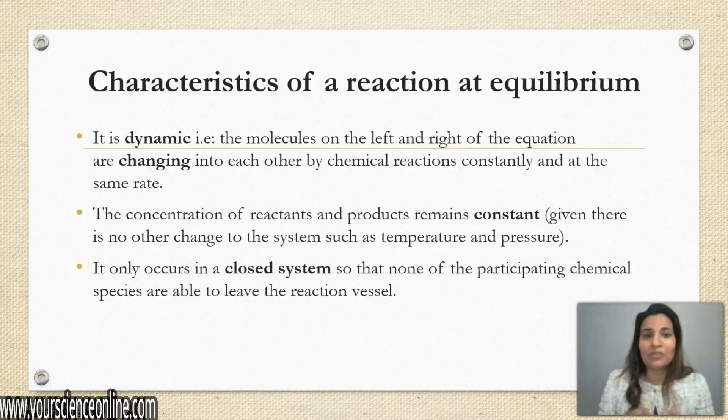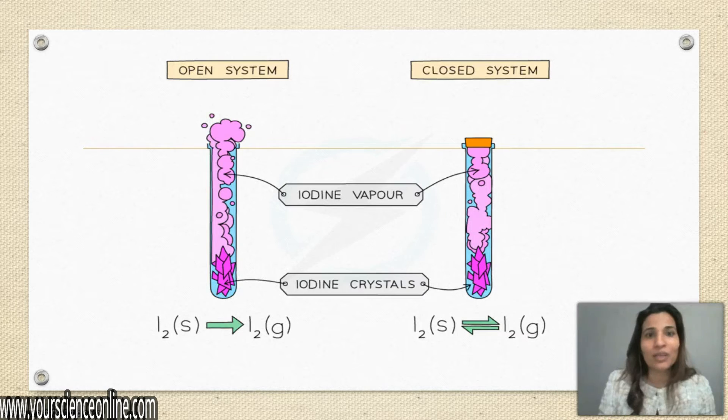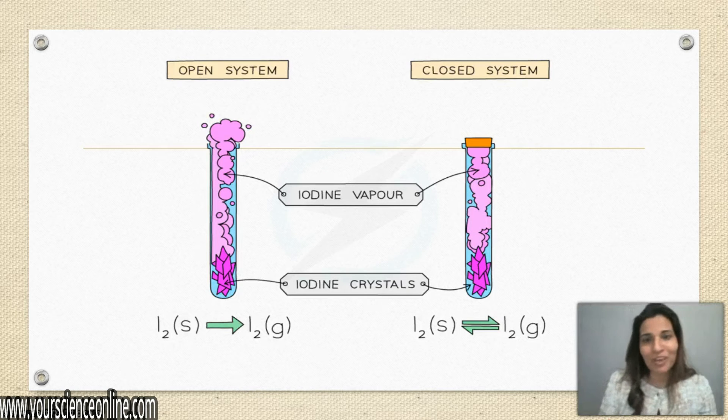What does closed system mean? It means reactants or products are not able to escape from the reaction vessel. Let me take you to the diagram in the next slide where you will understand this better.